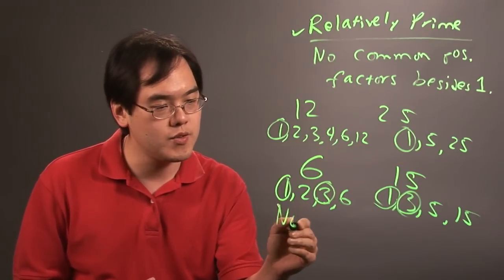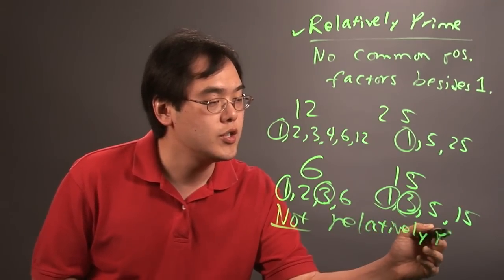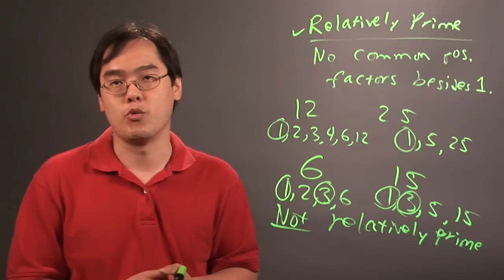So this is an example of two numbers that are not relatively prime. So numbers can only be relatively prime if the only factors that they share is just the number 1.